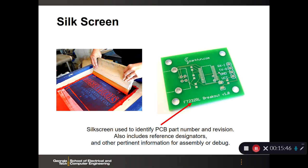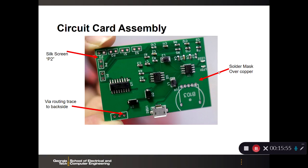The circuit card assembly has the PCB with components installed. A via routes a trace from a component like D1 along the board and through to make a connection to components mounted on the backside. The silk screen label such as P2 is visible. A lot of times you keep much of the copper on the board for a ground plane or power plane of VCC — you don't want to etch away all the copper, as a good ground plane is important for signal integrity.